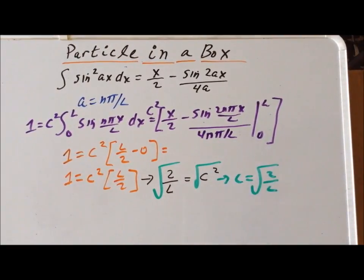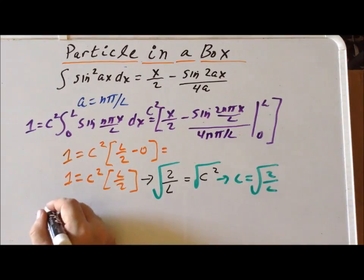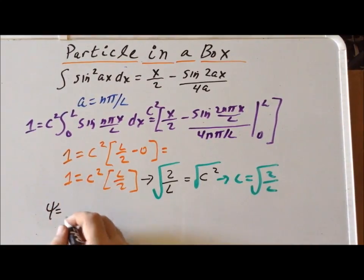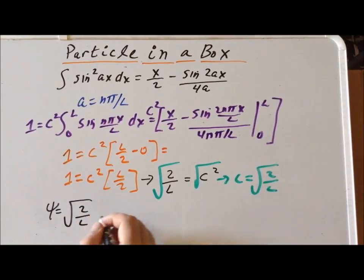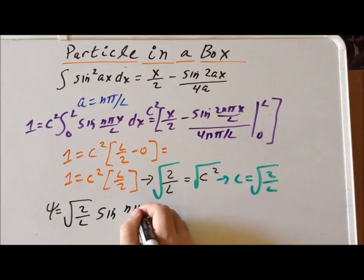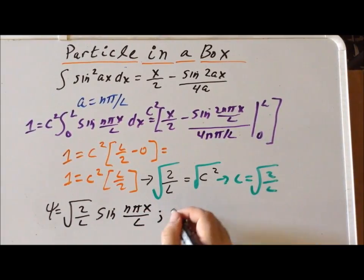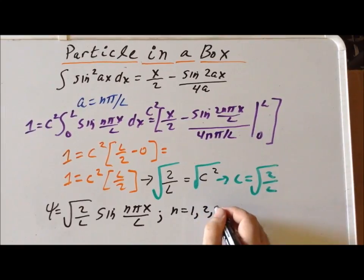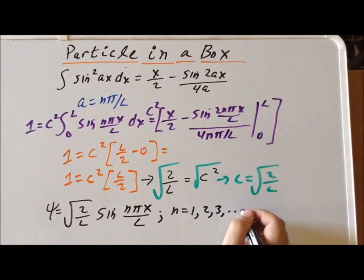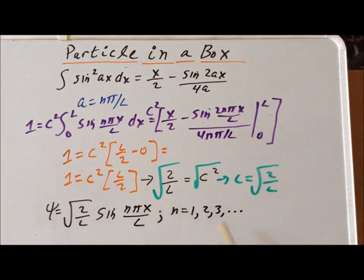In summary, the normalized eigenfunction for the particle in the box is psi equals the square root of 2/L times sine(nπx/L), where n can take the values 1, 2, 3, and so on — it must be a positive integer. These solutions are not only solutions to the Hamiltonian but are also normalized eigenfunctions. Thank you very much for your attention.